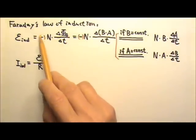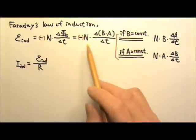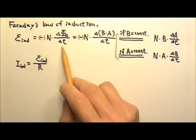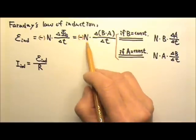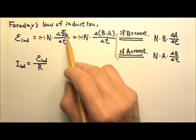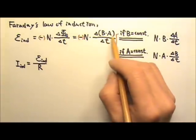Most of the time we can ignore the negative sign. We can just use this to find the amount of induced EMF. The n is number of loops, and phi b usually is just b times a.